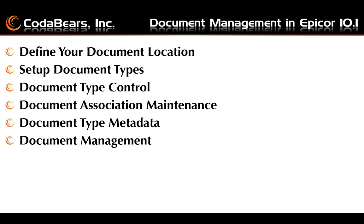This slide shows an outline of the steps to start using the document management software. First, you're going to want to define your document location in the Company Maintenance screen. Next, you're going to set up the document types and, if needed, the document type controls. Before you add different attachments, you're going to want to define items in the Document Association Maintenance screen to allow you to view and/or print each type of document.